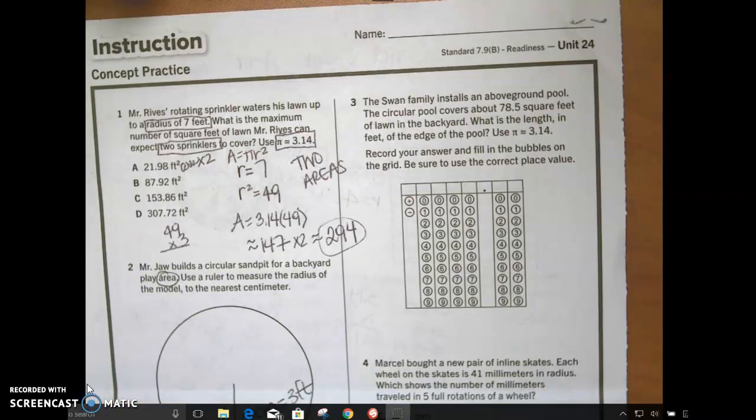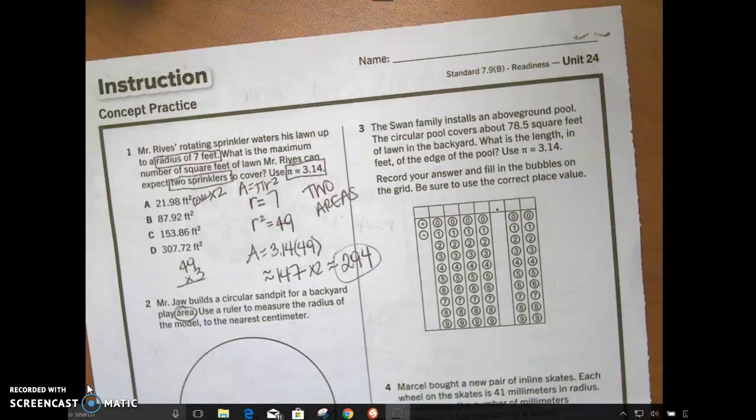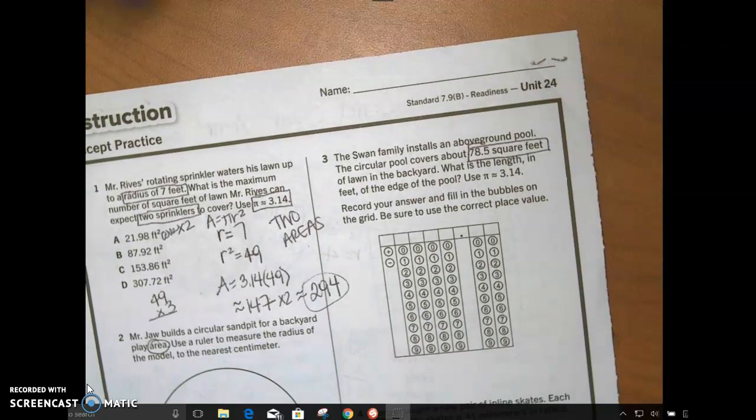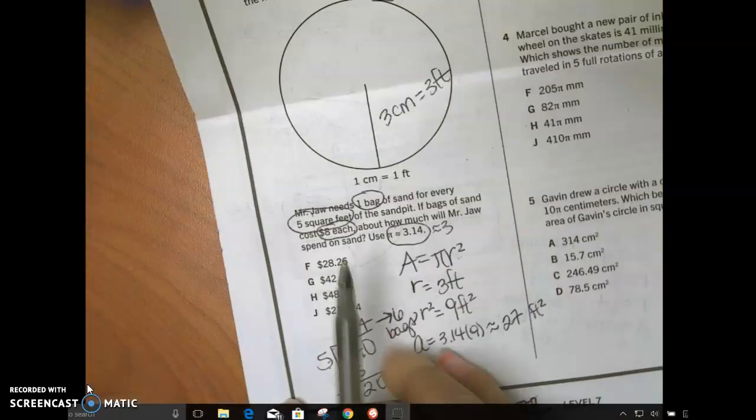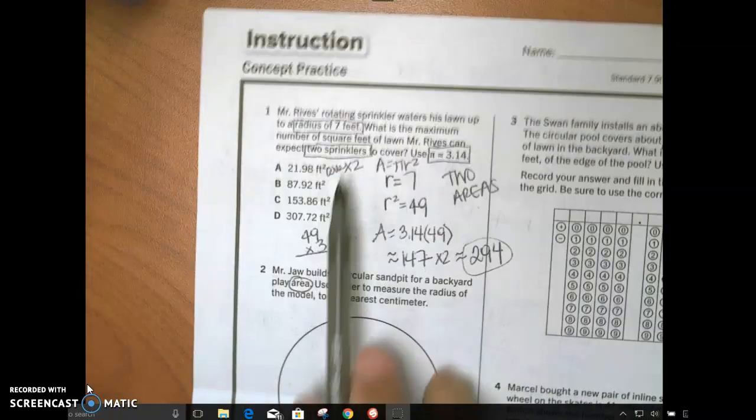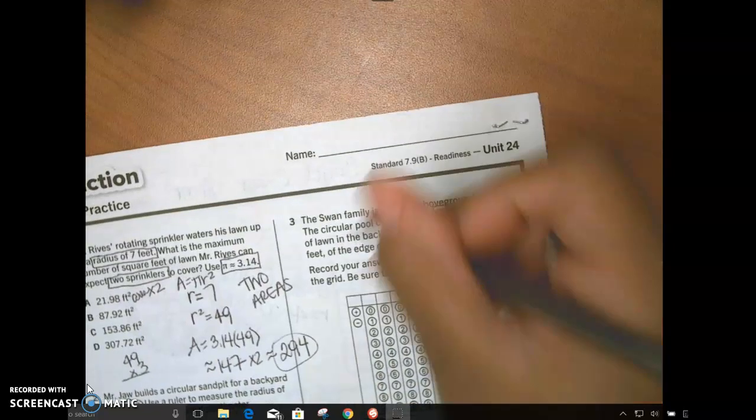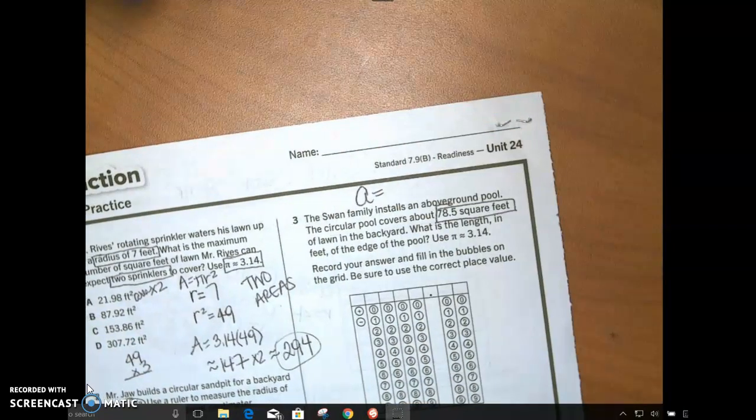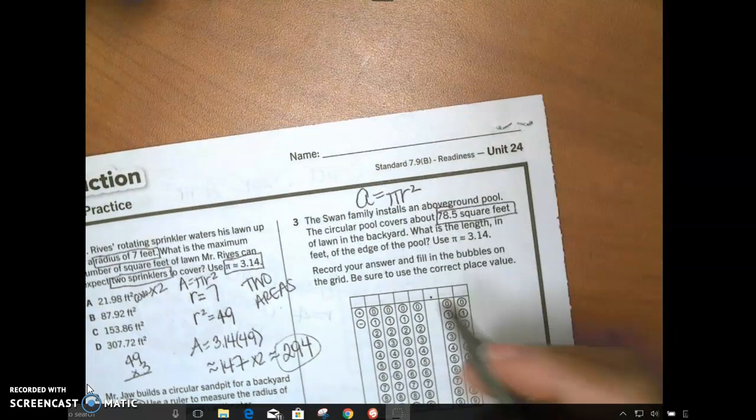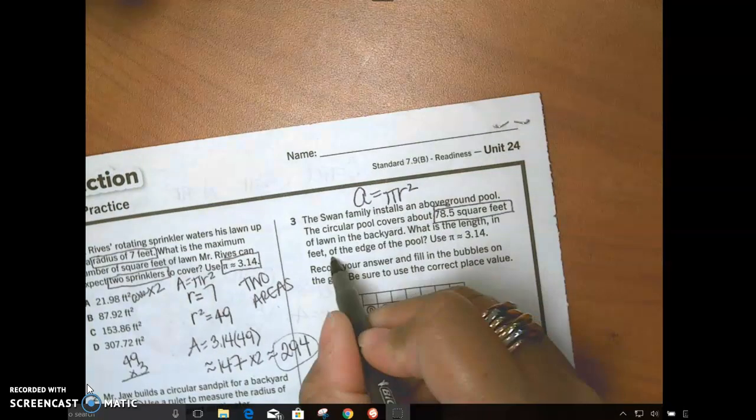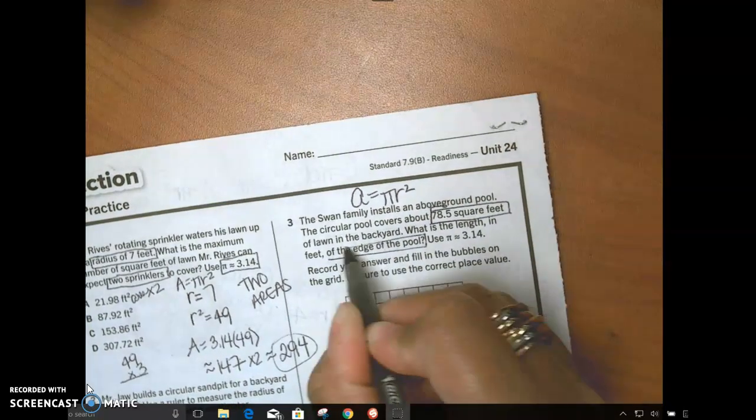The Swan family installs an above ground pool. The circular pool covers 78 and a half square feet. Square feet. This was square footage down here. This is square footage. What have I done for the past two problems? Area. So what am I going to need for square feet here? Area. Area again. A equals... What is the length in feet of the edge of the pool? Ooh. Now what do I need though? Circumference.